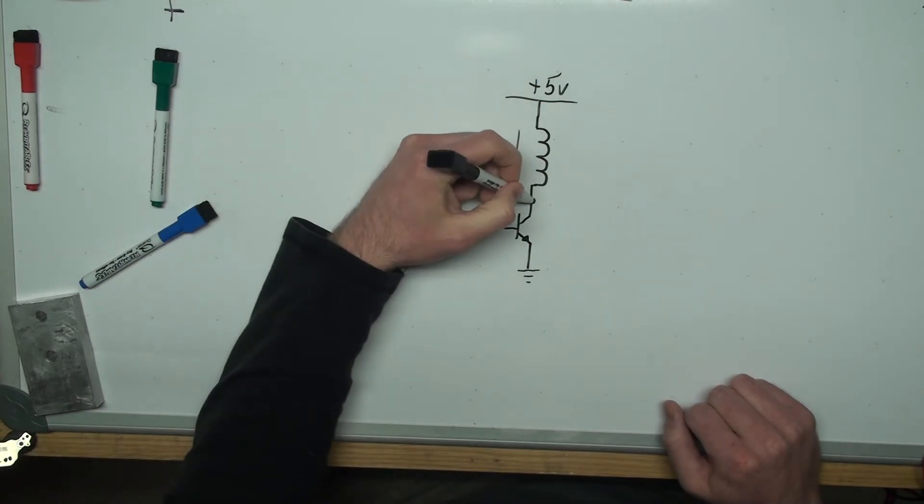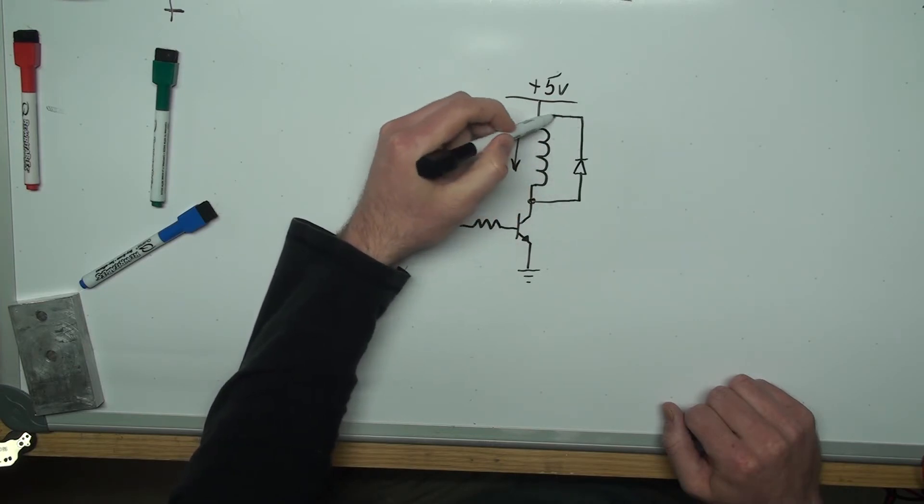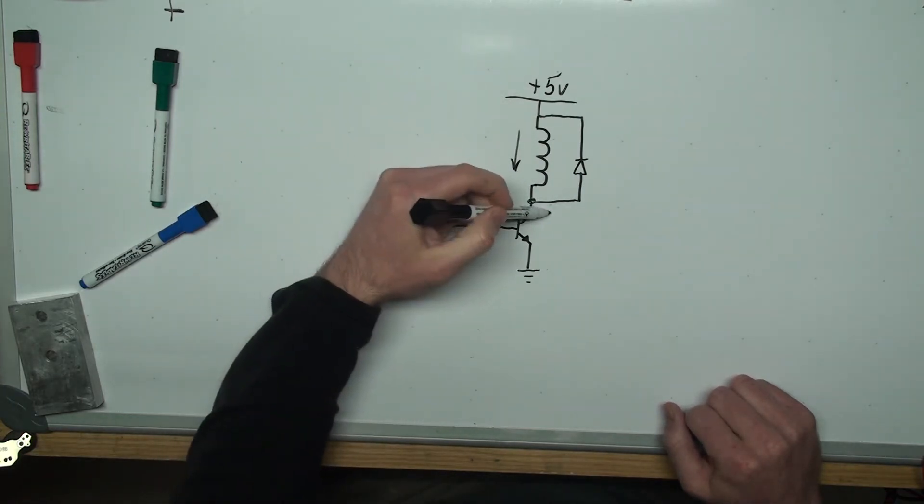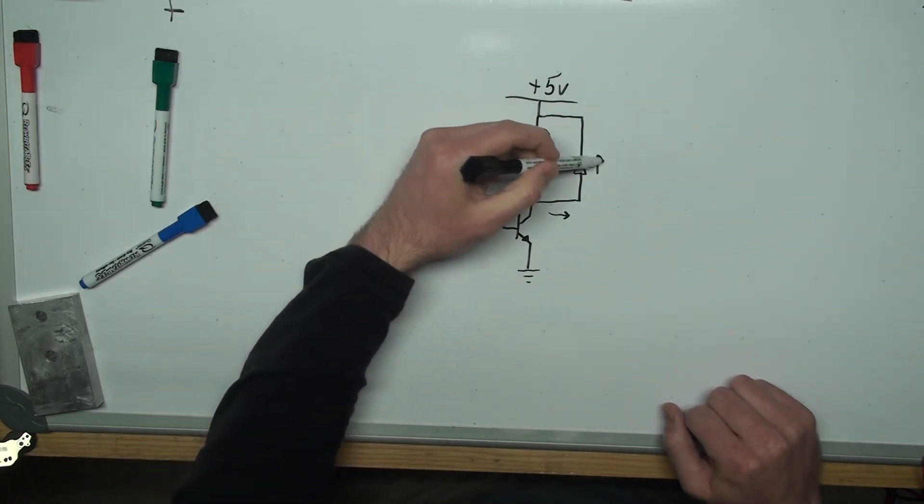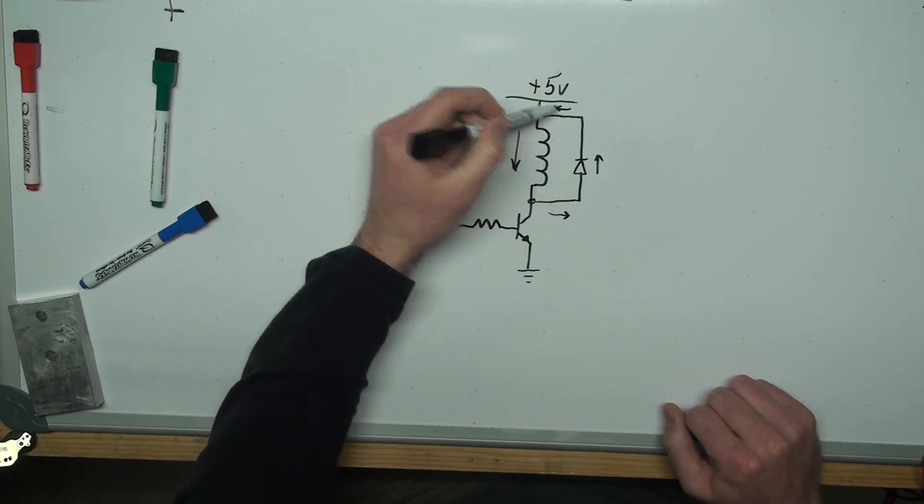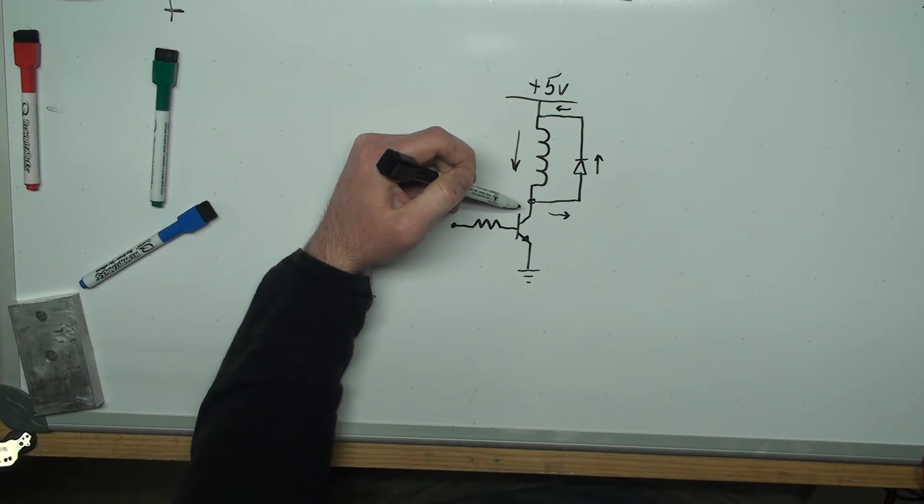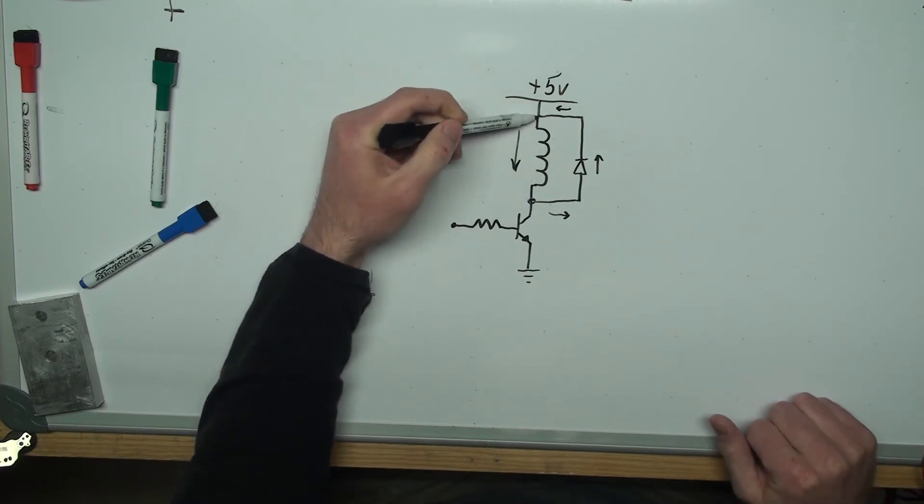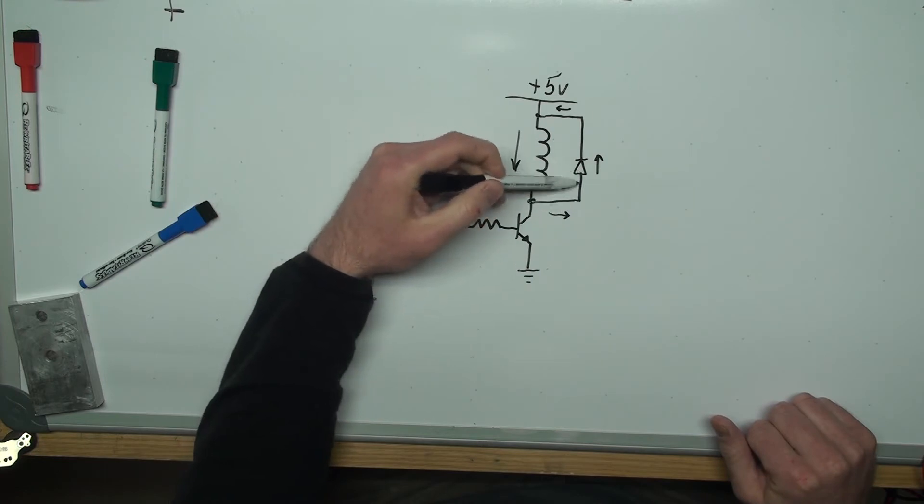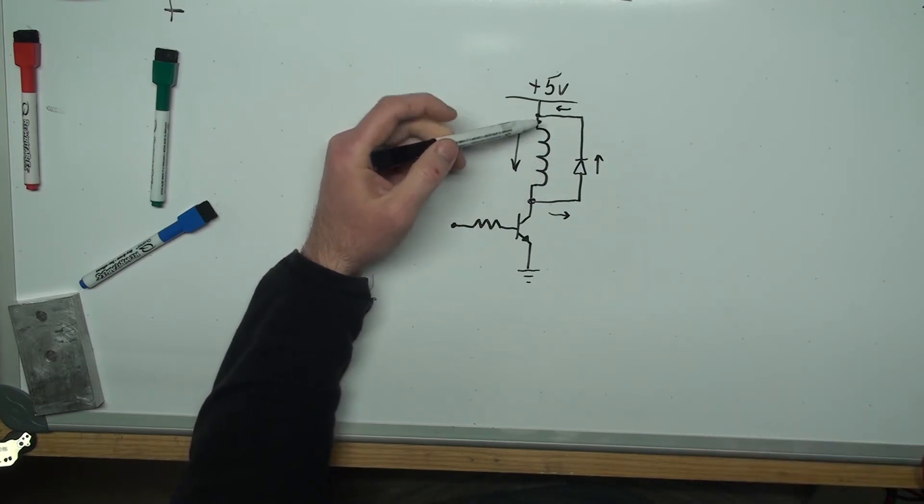After I do that demonstration, we'll then add what's called a freewheeling diode, which will be over here. What this does is it allows the current to continue along this path. So when the transistor is turned off, this large voltage that gets generated at this point will be higher than at this point, so current will flow through this reverse biased diode towards the positive rail, and that will just circulate until the energy is dissipated.